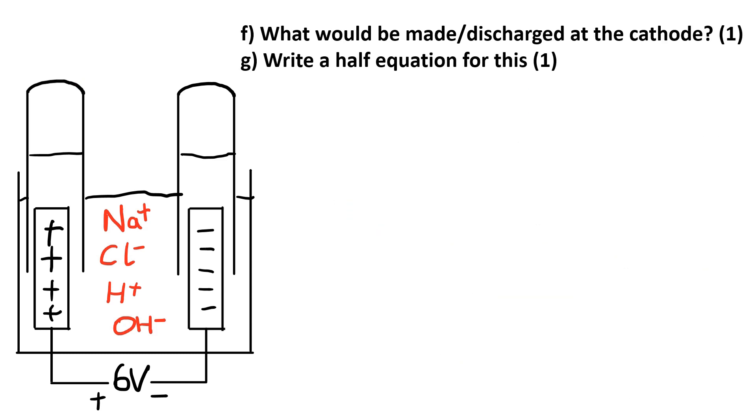Question F: what would be made or discharged at the cathode? Write a half equation for this. Once again, sketch out a cathode. We need to remember opposite charges attract, so the negative cathode is going to attract the positive sodium ions and the positive hydrogen ions.